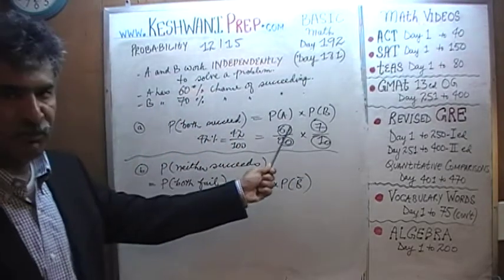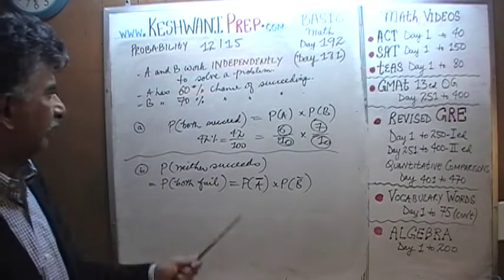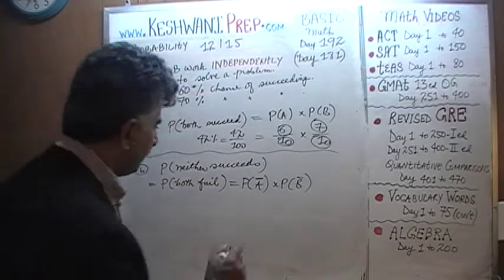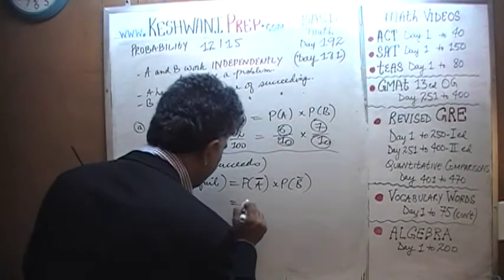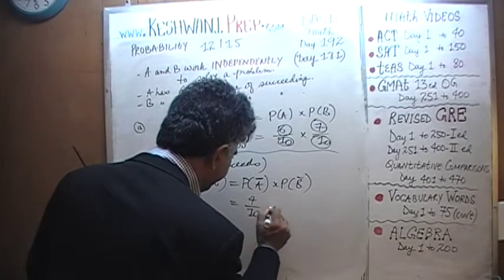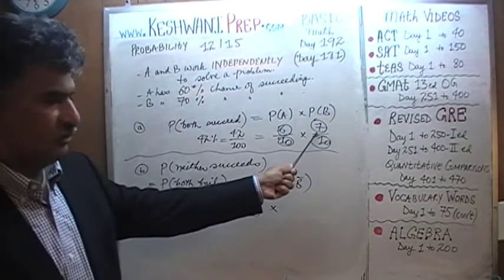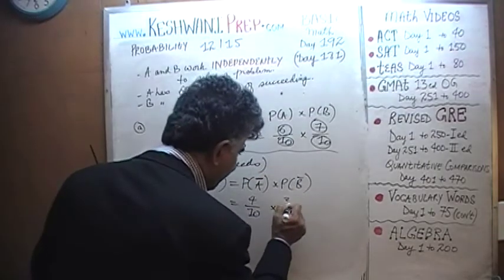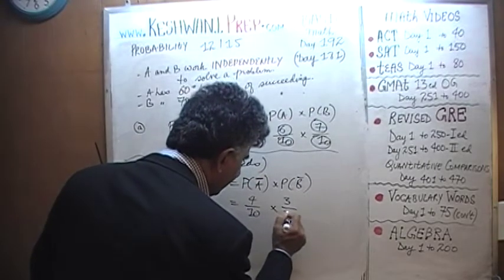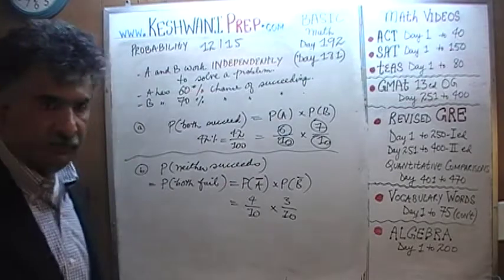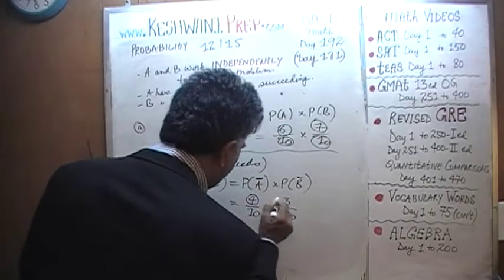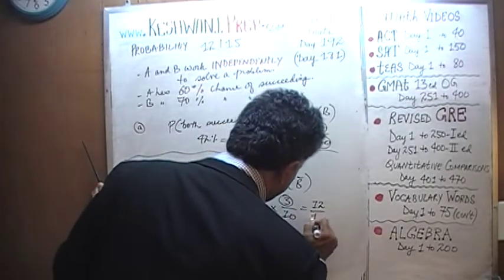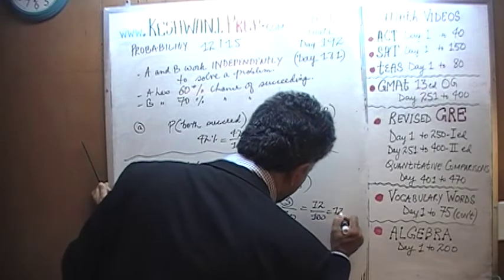We are told that A has a 60% chance of succeeding, which means A has a 40% chance of not succeeding. Similarly, B had a 70% chance of being successful, therefore B has a 30% chance of not succeeding. Same exact process: 4 times 3 is 12, so it's 12 out of 100 — simply 12 percent.